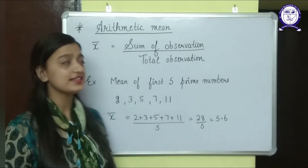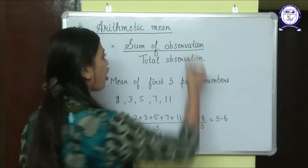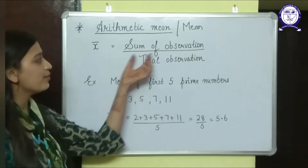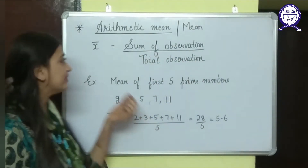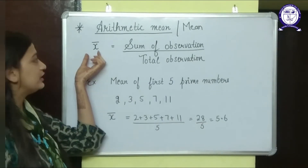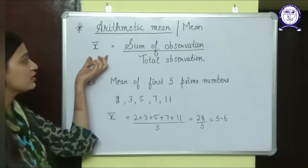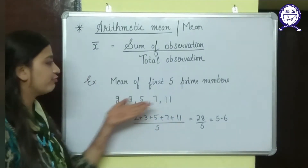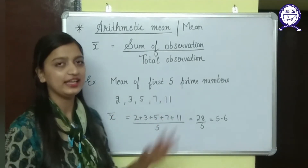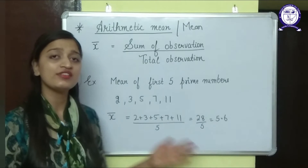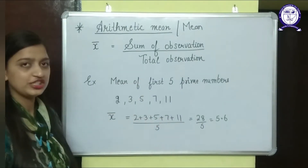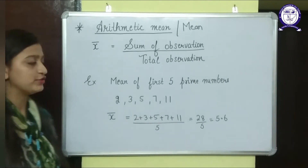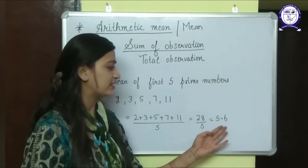Coming to our first topic, that is arithmetic mean, or simply we can call it mean. The formula for mean is sum of observations upon total observations, and x-bar is how we represent mean — this is the notation for mean. Let's take an example: find the mean of the first five prime numbers. The first five prime numbers are 2, 3, 5, 7, and 11. We simply apply the formula: sum of observations is adding all of them and dividing by the number of observations, that is 5. So we get 28 upon 5, that is 5.6.